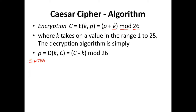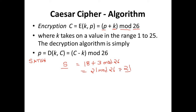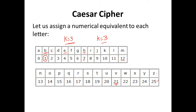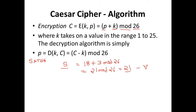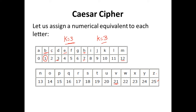Let's encrypt SATISH again using this notation. For S: the value of S is 18, so (18 + 3) mod 26 = 21, and 21 corresponds to V — so S encrypts as V. For A: the value is 0, so (0 + 3) mod 26 = 3, and position 3 corresponds to D — so A encrypts as D.